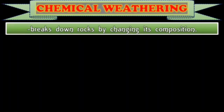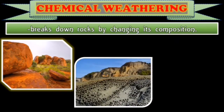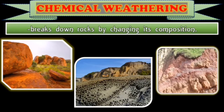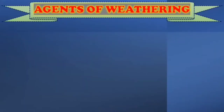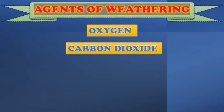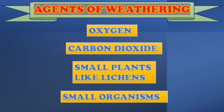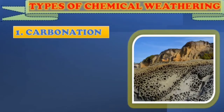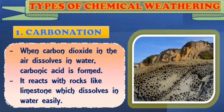Let's now proceed to chemical weathering. Chemical weathering breaks down rocks by changing their composition. Examples include oxidation, hydrolysis, and carbonation. In chemical weathering, rocks break up because their chemical composition is changed and their structure becomes weak. The agents that cause chemical weathering are found in the atmosphere and include oxygen, carbon dioxide, small plants like lichens, and other small organisms. In carbonation, when carbon dioxide in the air dissolves in water, carbonic acid is formed, which reacts with rocks like limestone, which dissolves in water easily.